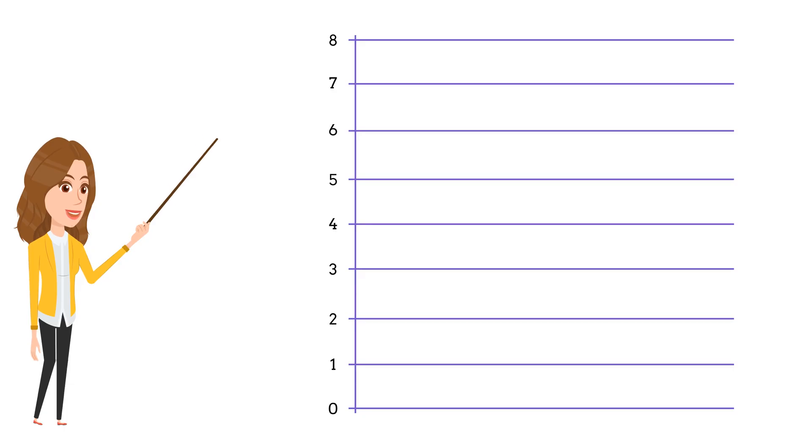Firstly, we need to understand the two important parts of a bar graph, the vertical axis and the horizontal axis.